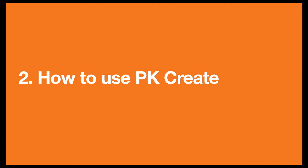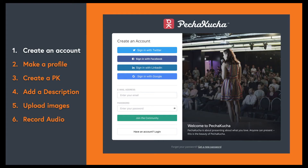The first thing to do is to create an account and log in — easy enough. You can create an account with an email and password or use a social media account. If you've been invited by an organizer, you'll have received a link via email with instructions for generating a new password for your profile.